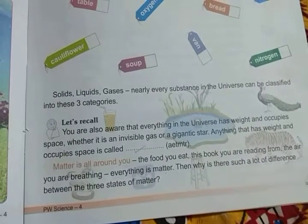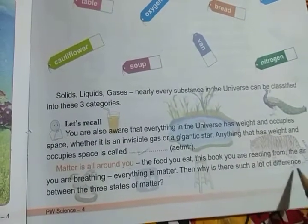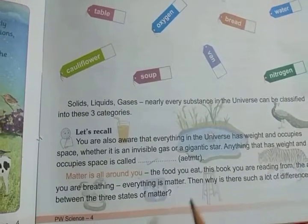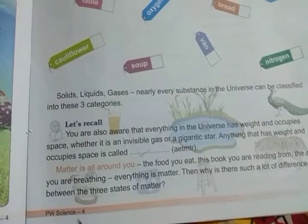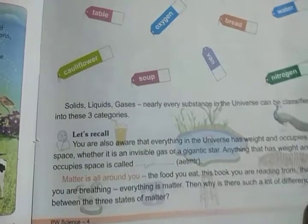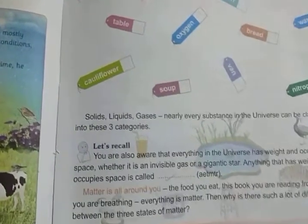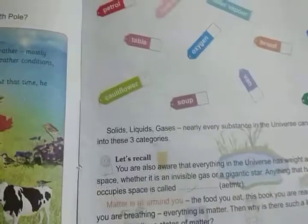Why is there such a lot of difference between the three states of matter? Because all substances and objects are made up of tiny atoms — so small that we cannot see them. Matter is made up of tiny particles called atoms.